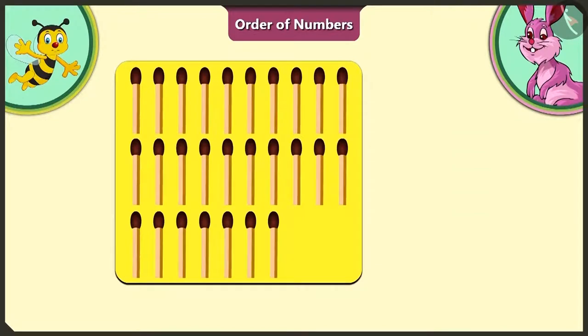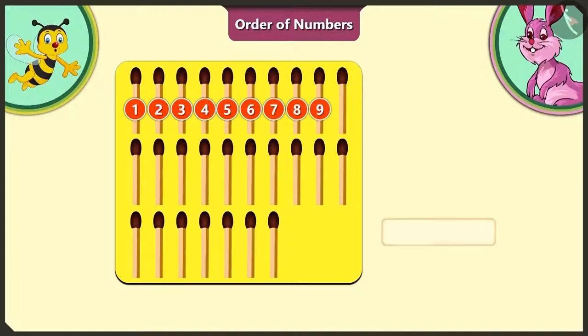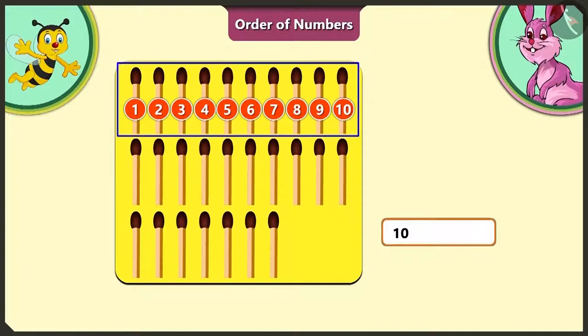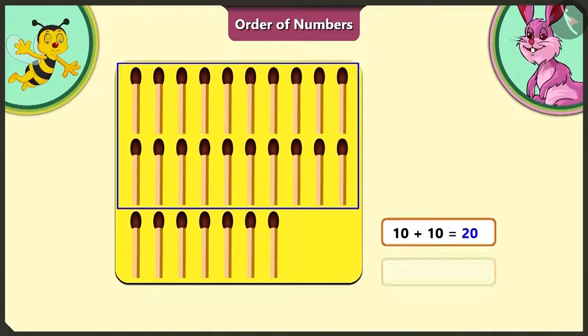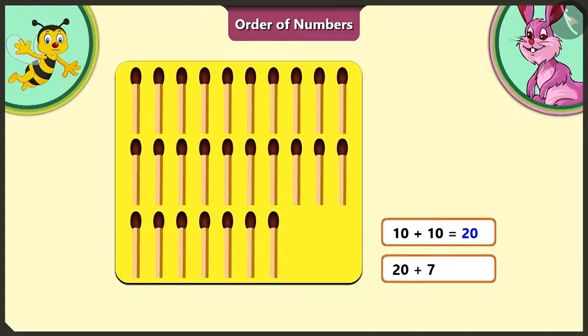Let's see the first group of matchsticks on the yellow card. There are 1, 2, 3, 4, 5, 6, 7, 8, 9, 10 matchsticks. To this first group of 10 matchsticks, we add the next group. There will be a total of 20 matchsticks and adding the remaining 7 matchsticks to this, we get a total of 27 matchsticks.